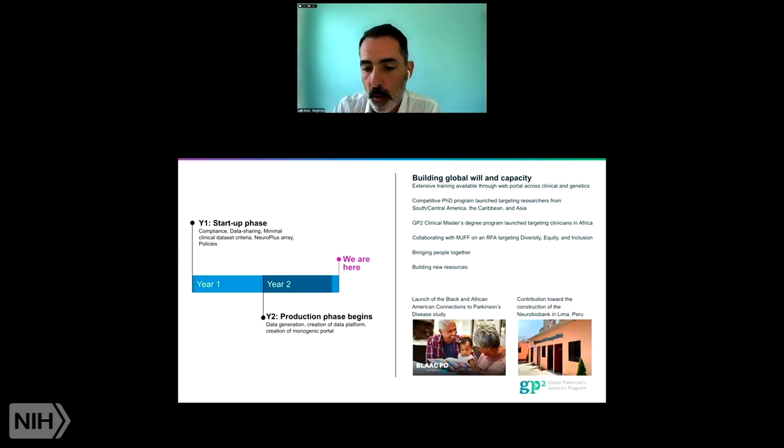GP2 has also supported the creation of a new cohort. This is the Black and African-American Connections to PD study or the Black PD study. Black and African-American Parkinson's disease patients are incredibly underrepresented in Parkinson's disease research. So our aim is here to eventually collect around 5,000 patients. The first part aimed at understanding genetics, but hoping that this would form the hub for future studies. And GP2 also contributed towards the construction of a biobank in Lima in Peru. Again, with the idea of creating resources to allow these groups from around the world to really execute their own research projects.